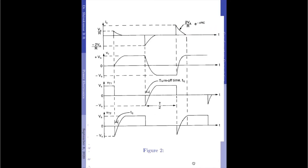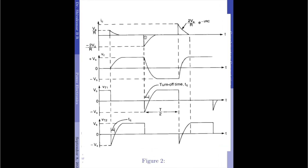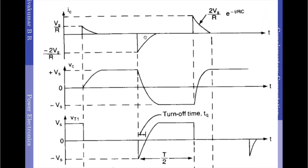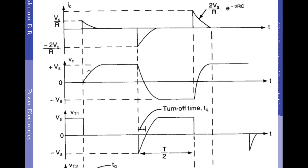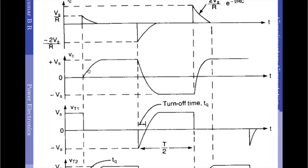Now we come to the discussion of the waveforms. The first waveform shown is the current waveform across the capacitor. Then we have the voltage waveform across the capacitor itself. Since it is a voltage commutation, it is the voltage across the capacitor waveform that is most important to us.